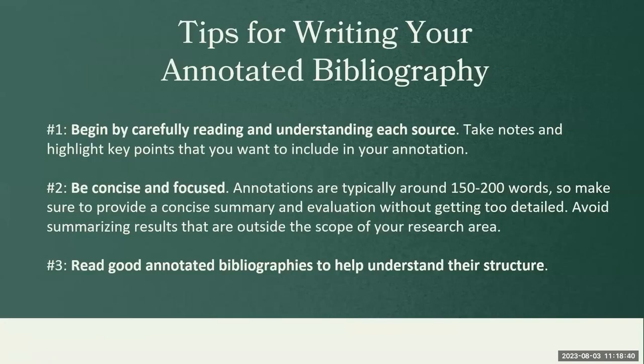Now that we understand the components, let's discuss some tips for writing effective annotated bibliographies. Tip one: begin by carefully reading and understanding each source. Take notes and highlight key points that you want to include in your annotation. Tip two: be concise and focused. Annotations are typically around 150 to 200 words, so make sure to provide a concise summary and evaluation without getting too detailed. Avoid summarizing results that are outside the scope of your research or your interest in the topic.